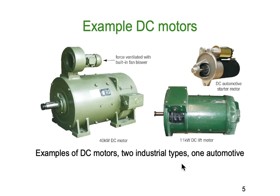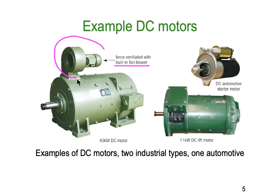Here are some examples of DC motors. The first is a large DC motor. DC motors are often used because of their very good speed control, especially at low RPMs — you can achieve full output torque. However, at very low speeds you don't get much ventilation from the motor's fan, so quite often they have a separate forced-ventilation fan built in. This one is a 40 kilowatt machine.